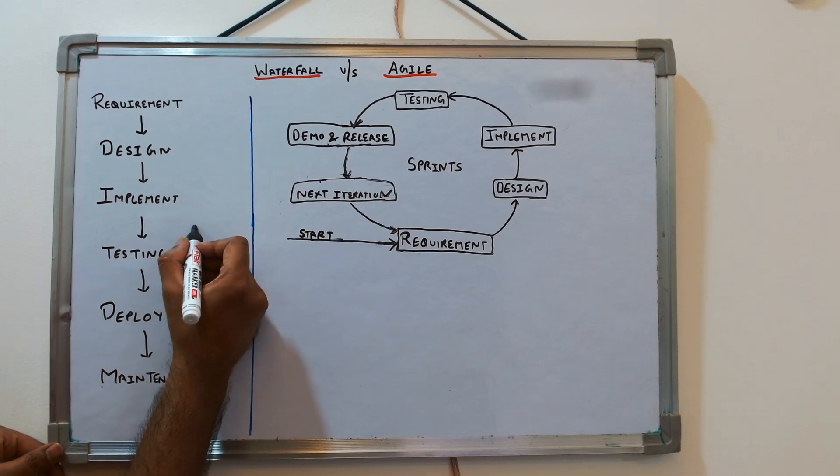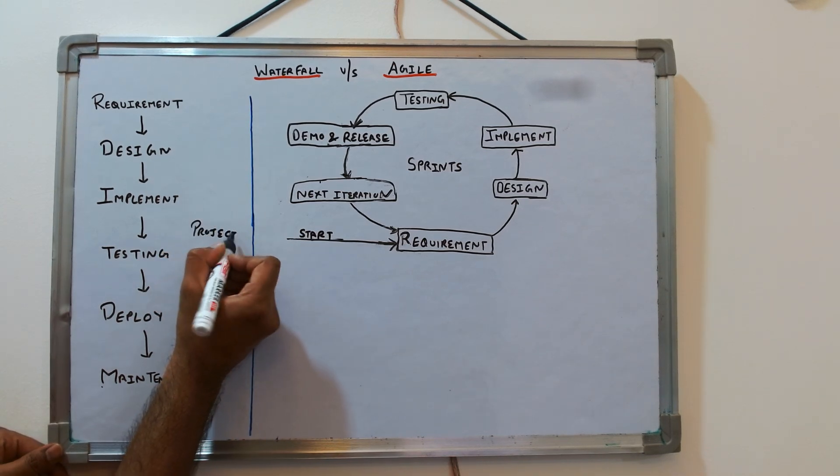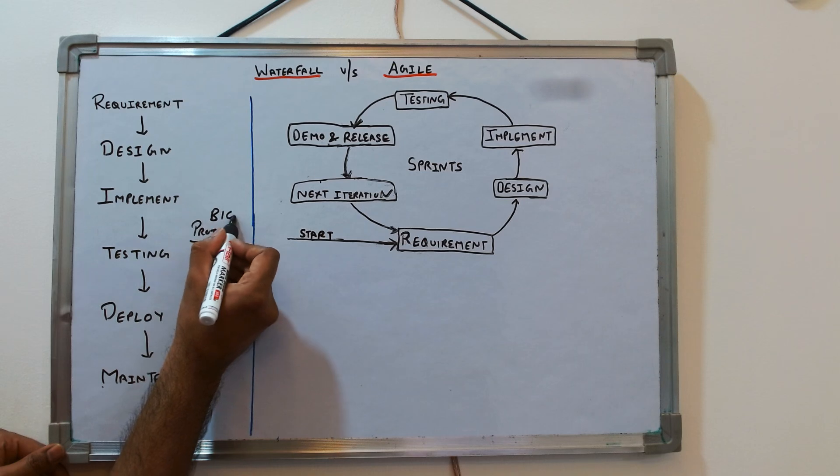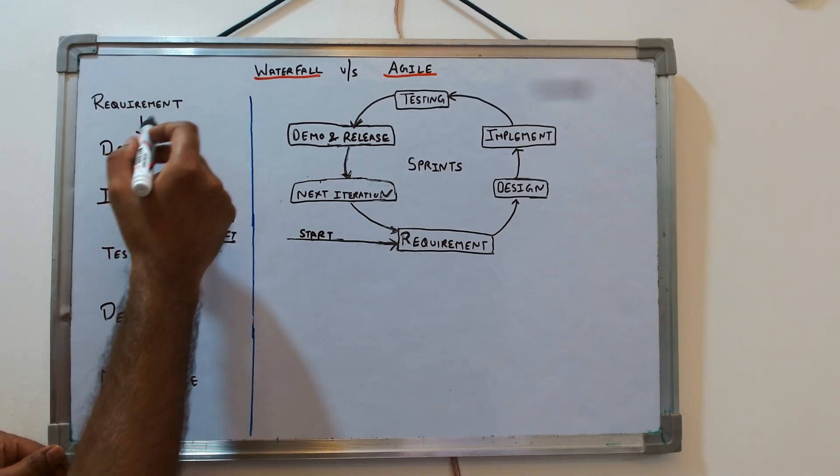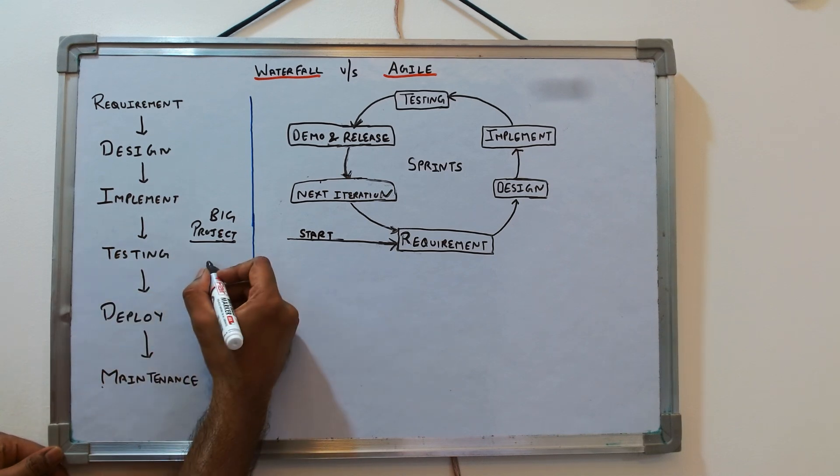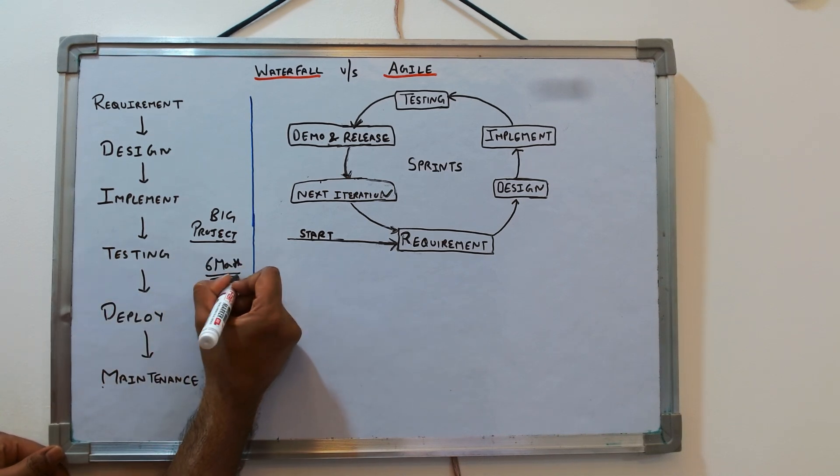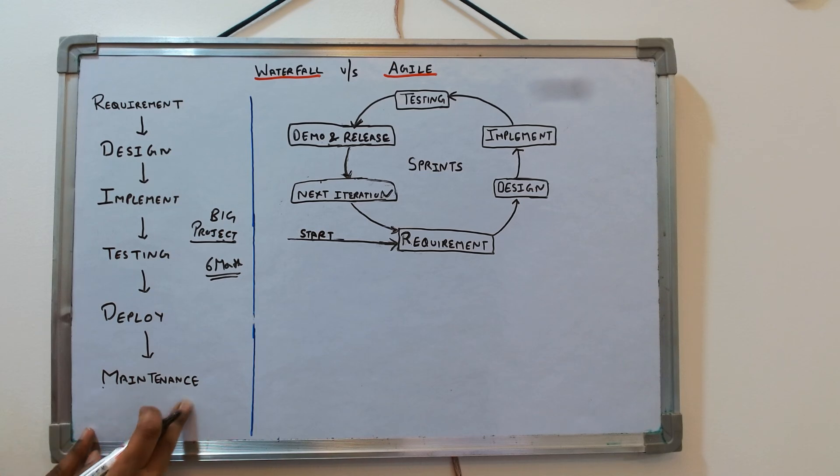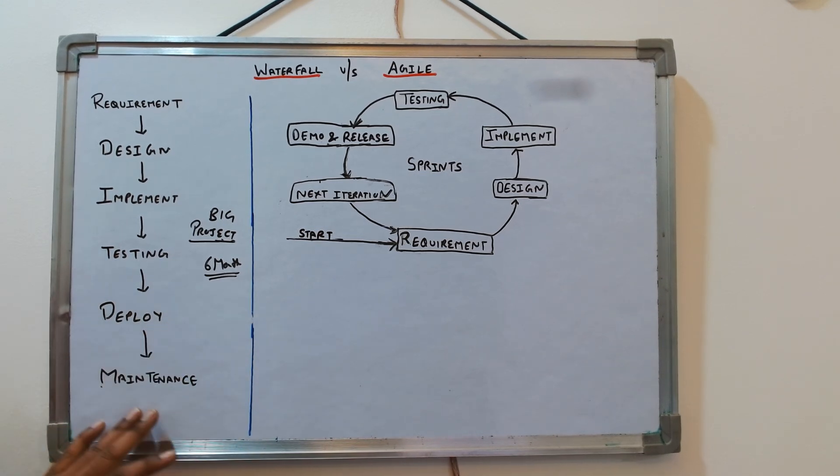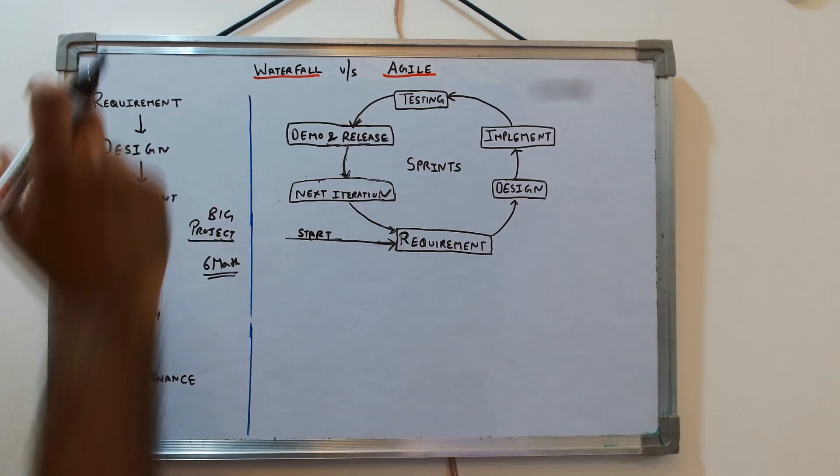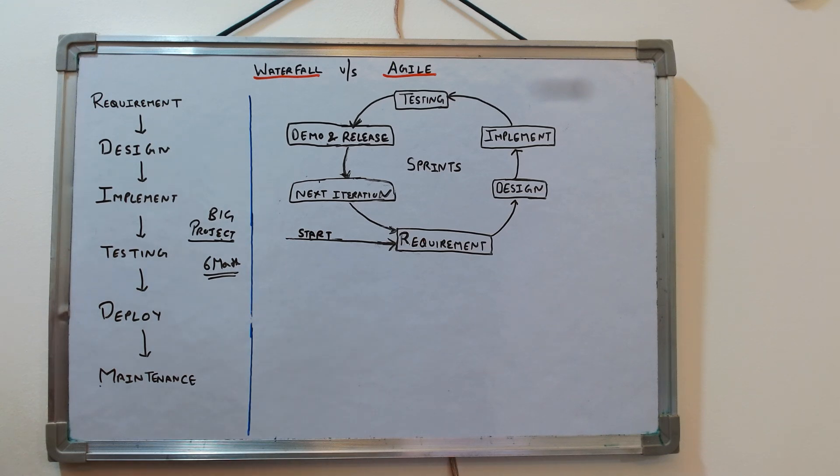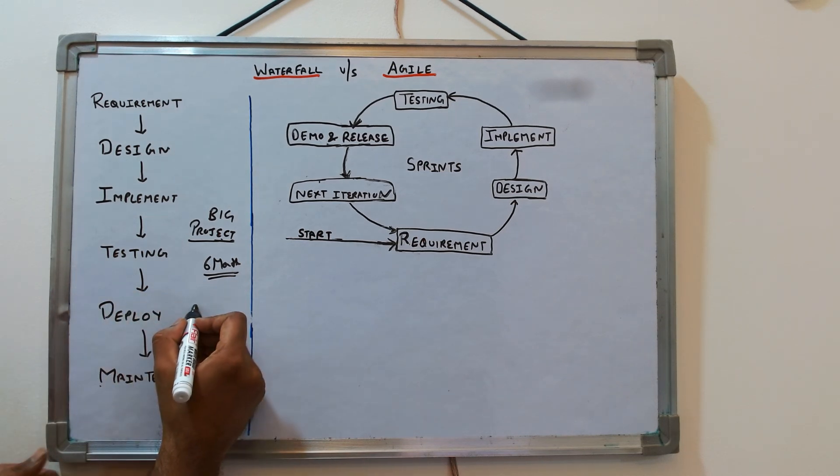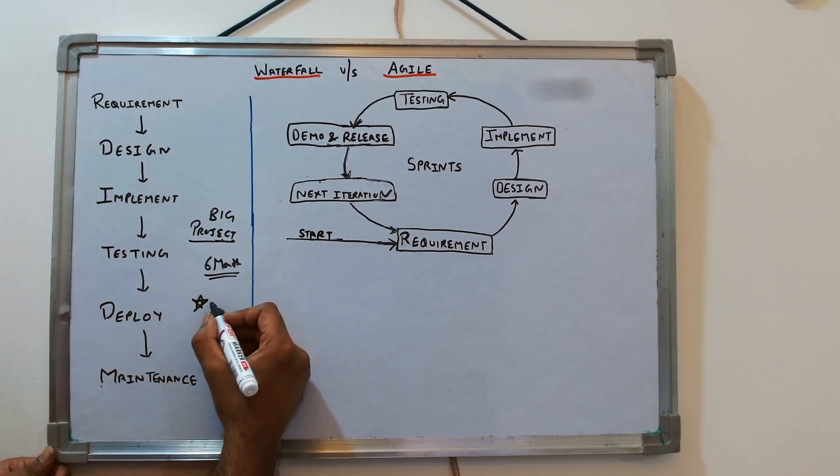Now let's say you got one big project which, during requirement, design, implementation, and testing, might take six months till you reach the live deploy. After six months, when it goes to live deploy and you're doing maintenance, what if the client says, 'Hey, I need certain changes. This is not what I asked for. There is some misunderstanding.' The major problem is that the client is only involved initially.